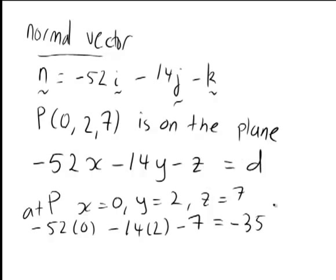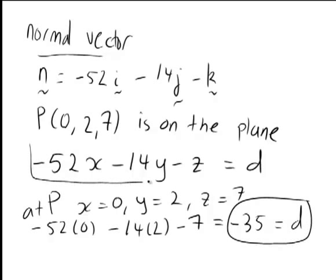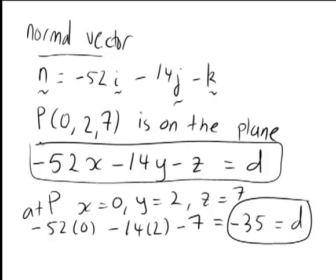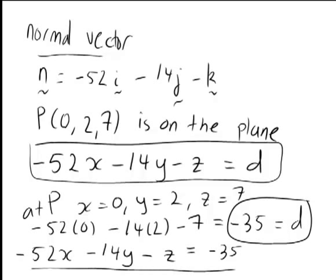Since D equals negative 35, the equation of the plane is: negative 52x minus 14y minus z equals negative 35. To verify, we can substitute point C with coordinates (2, -5, 1) into the left-hand side, and it also gives negative 35, confirming that our equation is correct.